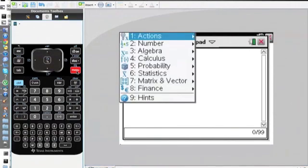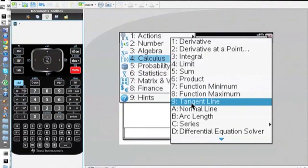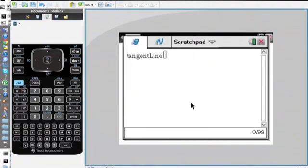So we're going to go to menu, go to number four which is calculus, and on the bottom there's tangent line. You click this and it gives you an open bracket.